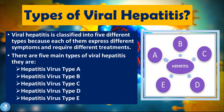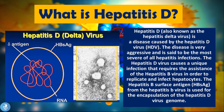Hepatitis D, also known as the hepatitis delta virus, is a disease caused by the hepatitis D virus, commonly known as HDV. The disease is very aggressive and is said to be the most severe of all hepatitis infections. The hepatitis D virus causes a unique infection that requires the assistance of the hepatitis B virus in order to replicate and infect hepatocytes. The hepatitis B surface antigen (HBsAg) is used for the encapsulation of the HDV genome.